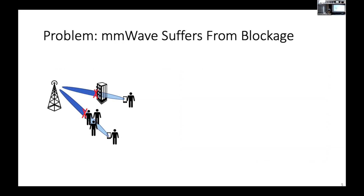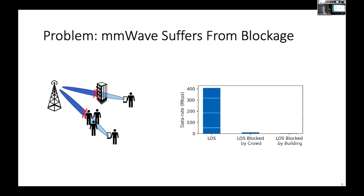In another example, a building with concrete walls worsens the performance even further. Based on prior work and our simulation results, compared to the line-of-sight scenario on the left, when you have obstacle blockage the data rate drops close to zero. This is one of the main reasons why millimeter wave has mainly been used for indoor, close-range scenarios.